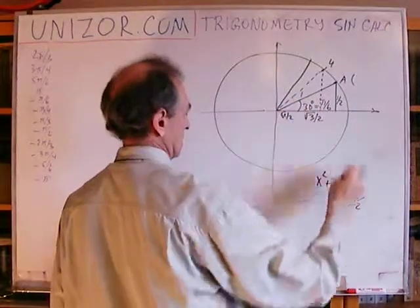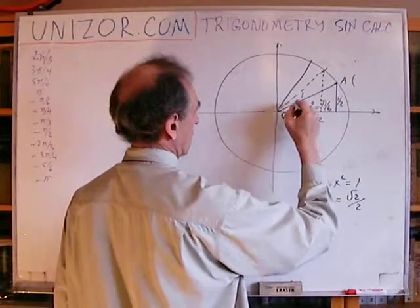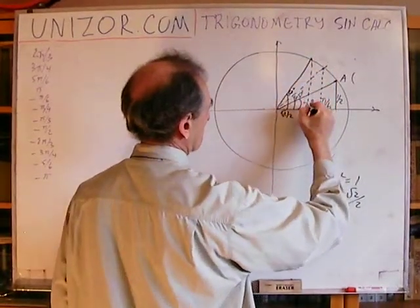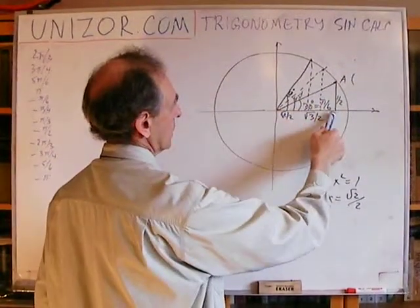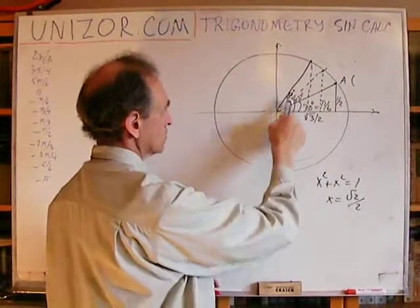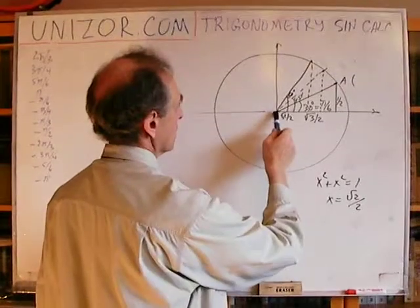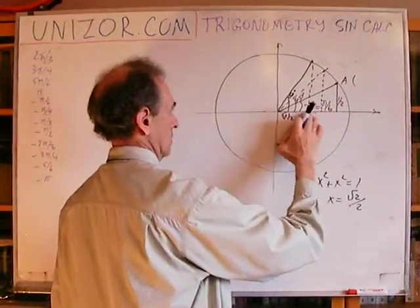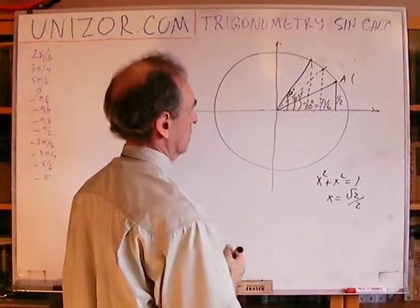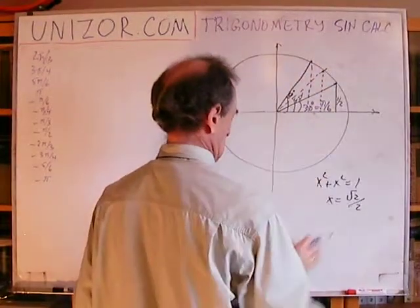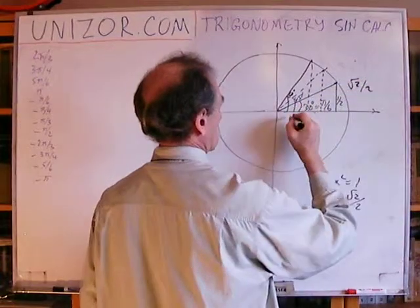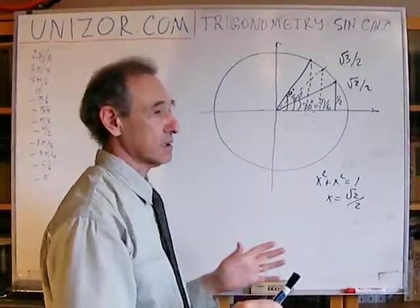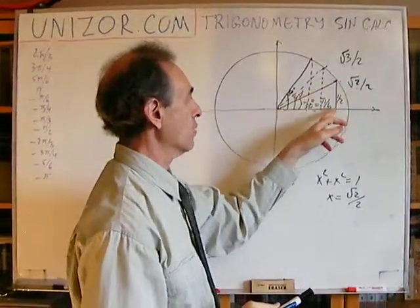And finally, 60 degrees. This triangle is very much like the 30-degree one, because if this angle is 60, then the other is 30 degrees. So the abscissa in this case is half of the hypotenuse, which is one half, and the ordinate is square root of three over two. That's all I need — I only remember one half; everything else is derived.